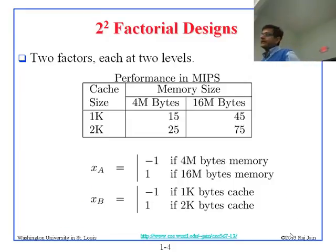Here is a design. Here is the example that we measured the performance in MIPS for two memory sizes and two cache sizes. We are going to have two variables. XA is minus one if this is the memory, and plus one if this is the memory. XB is minus one if this is the cache size, and plus one if this is the cache size.